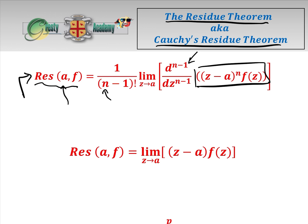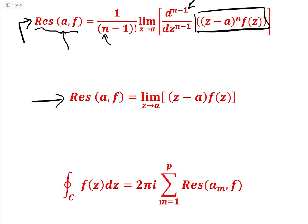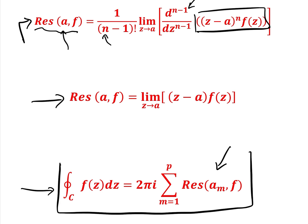When the pole only has a singularity of order 1, that all simplifies to a simpler expression. And then the last part of the residue theorem: when we want to do an integral around a curve C, all of the residues within that region are summed up — and this is the real power of the residue theorem.